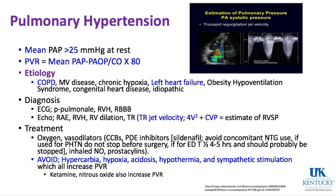Diagnosis of pulmonary hypertension: on electrocardiogram you can see P pulmonale, or peaked P waves in lead 2 greater than 3 millimeters, right ventricular hypertrophy, and right bundle branch block. On echocardiography, you see enlargement of the right atrium, the right ventricle, RV dilation, and a tricuspid regurgitation jet that is under high velocity.